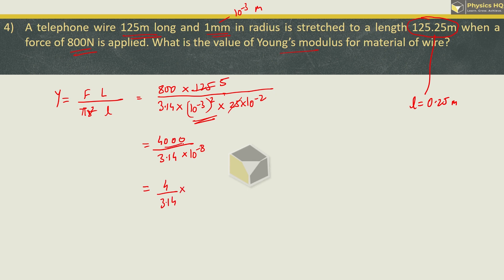So we got 4 / 3.14. This plus 8 and 4000—three zeros make it 10^11. And when you divide 4 by 3.14, you get somewhere around 1.27 × 10^11. Hope you all understood this. Next we will see.